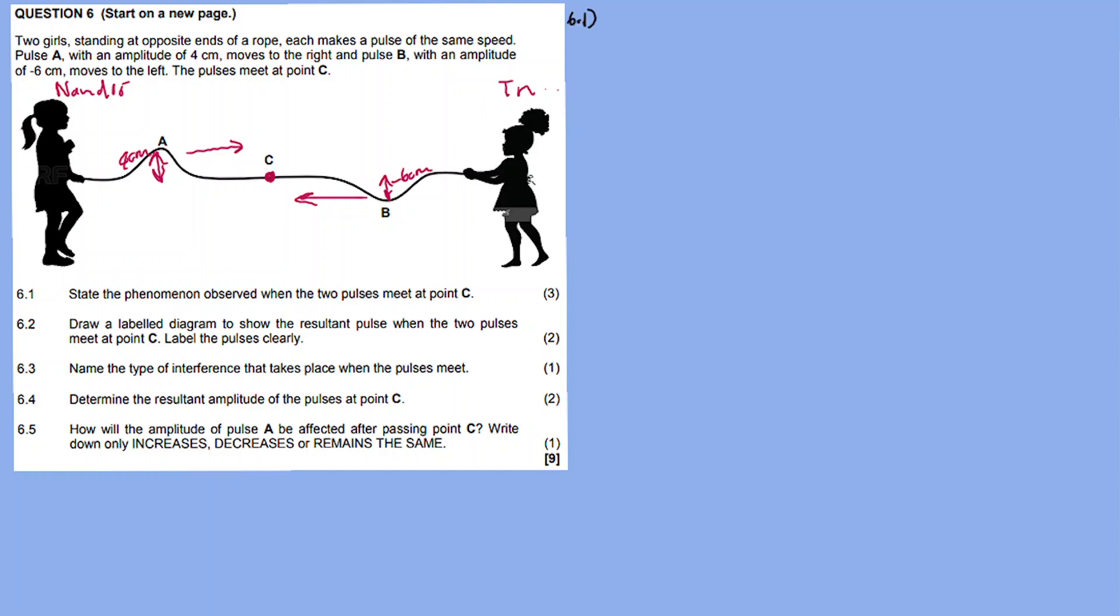Question 6.1: State the phenomenon observed when the two pulses meet at point C. Well, when a pulse is at a point, something happens - there's an interference happening. It's called superposition. It is the superposition of pulses. Point C is where the sum of the amplitudes of the two pulses occupy the same space at the same time.